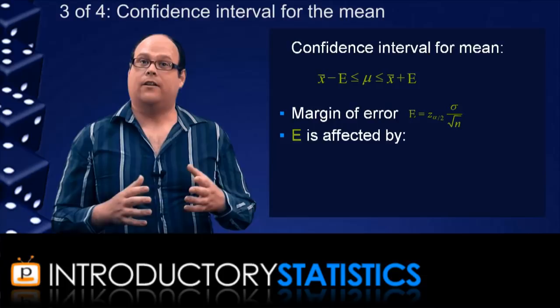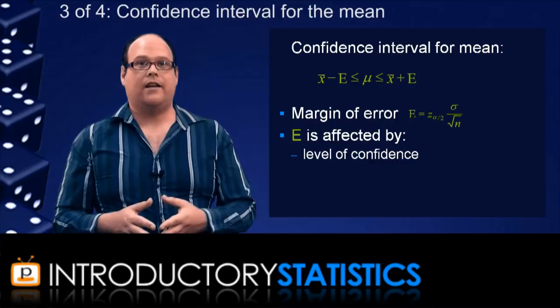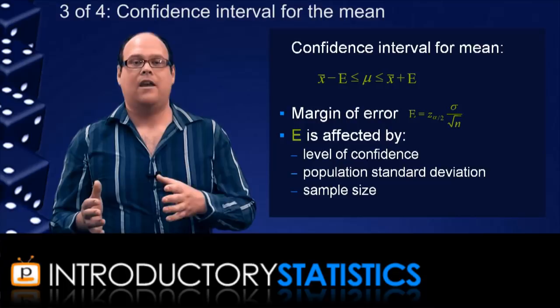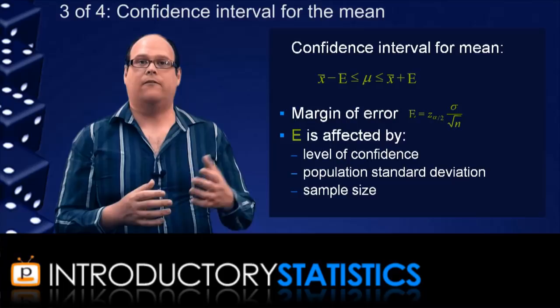First, the level of confidence. A bigger confidence level will mean a bigger critical value, causing a bigger margin of error. Second, the population standard deviation. A bigger sigma causes a bigger margin of error. And finally, the sample size. Because n is in the denominator, a large sample size produces a smaller margin of error. And that's why, mathematically, the three things have the effect on the confidence interval we were mentioning before.